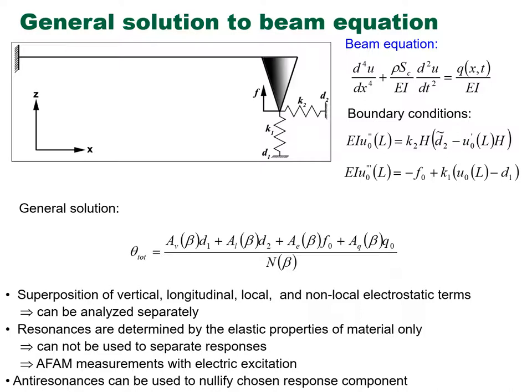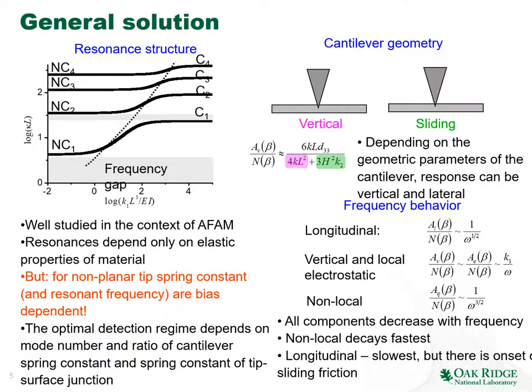There are good things and bad things about this equation. First, the signal is linear — a superposition of vertical, longitudinal, local, and non-local terms — meaning these contributions can be studied separately. Second, the resonances are determined by the elastic properties of the material only, which means we cannot use resonance imaging to separate vertical, longitudinal, or local terms since they are amplified to the same degree. However, anti-resonances can in principle be used to nullify chosen response components, though practically we don't necessarily know where they are.